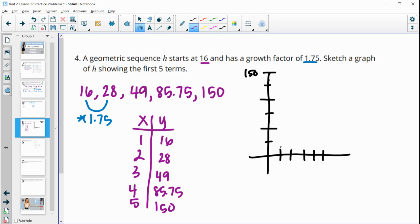So at 1, it was at 16, so a little bit more than halfway to 25. At 2, it was at 28, so just over 25. At 3, it was at 49, so almost to 50. At 4, it was at 85.75, is kind of halfway between 75 and 100. And then at 5, it was at 150. So you kind of see it growing at a curve there at an exponential function.